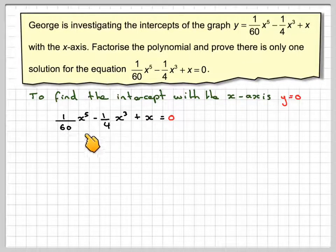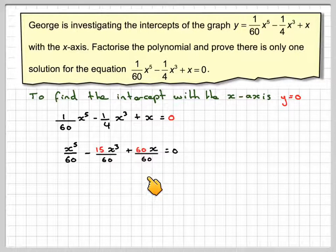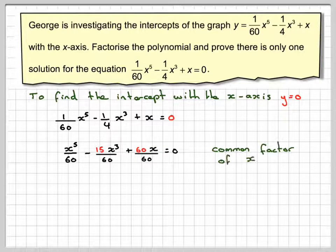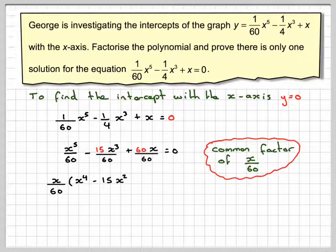We put this over a common denominator of 60, giving x⁵/60 - 15x³/60 + 60x/60 = 0. We can then see there is a common factor of x/60, so taking that out leaves x/60 times (x⁴ - 15x² + 60) = 0.